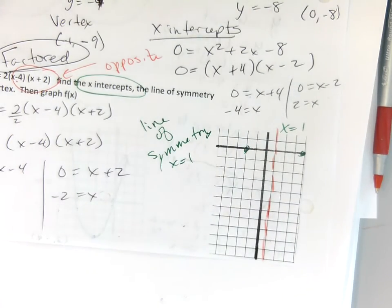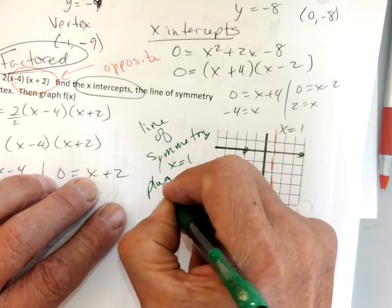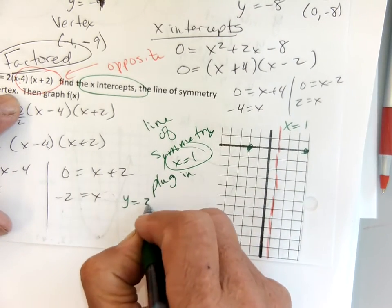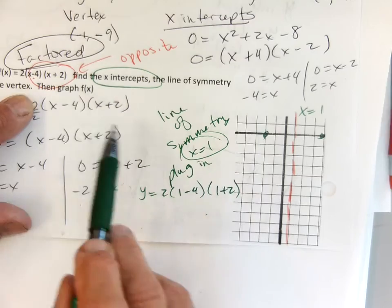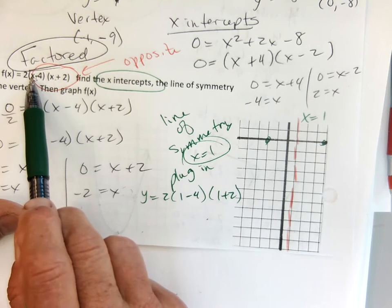The vertex has to be on this line somewhere. So let's plug in x equals 1 to find where it is. I'm going to have y equals 2 times (1 minus 4) times (1 plus 2). I put the 1 in for x in both places.